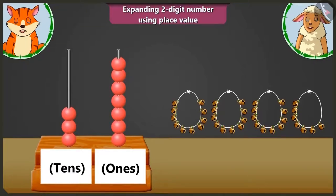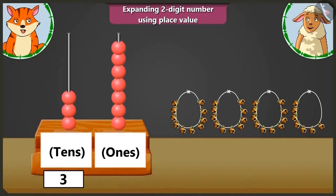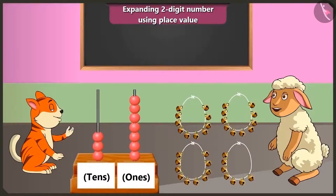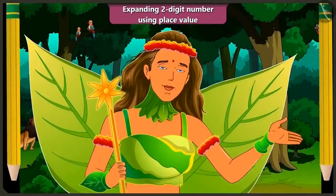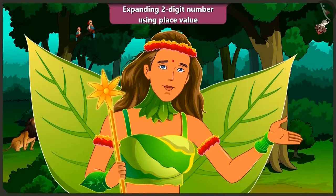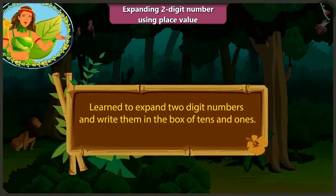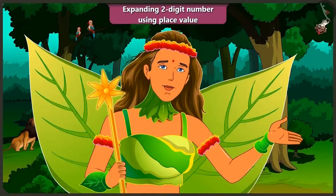Can you tell me what number the beads on the abacus make? On this abacus, in the tens box there are 1, 2 and 3 beads, so we write 3. In the ones box there are 7 beads, so we write 7. The number it makes is 37. In the next video, we will understand some interesting facts about tens and ones.